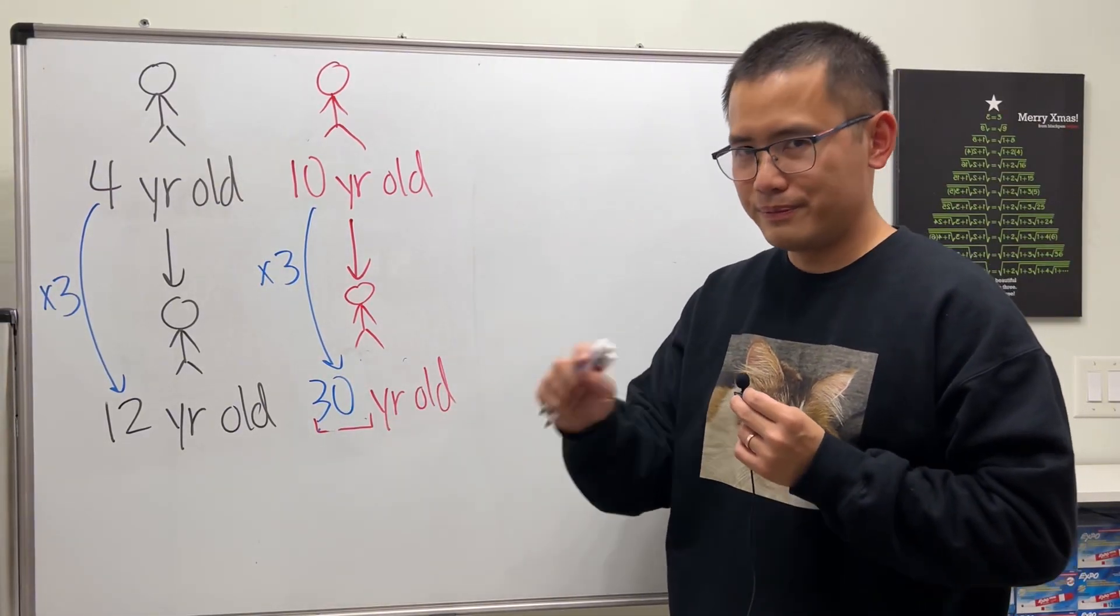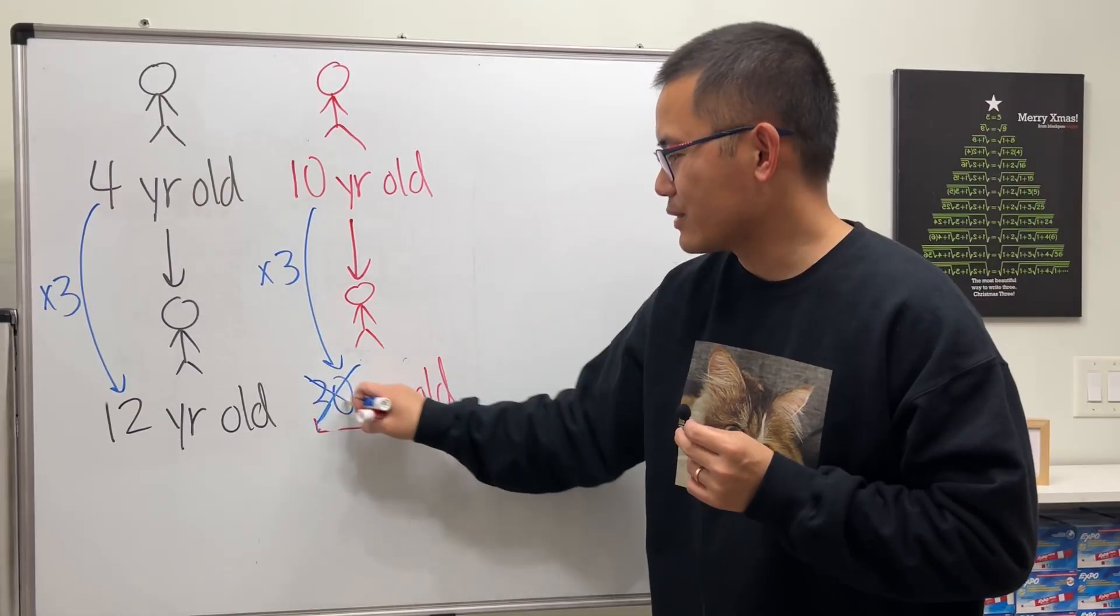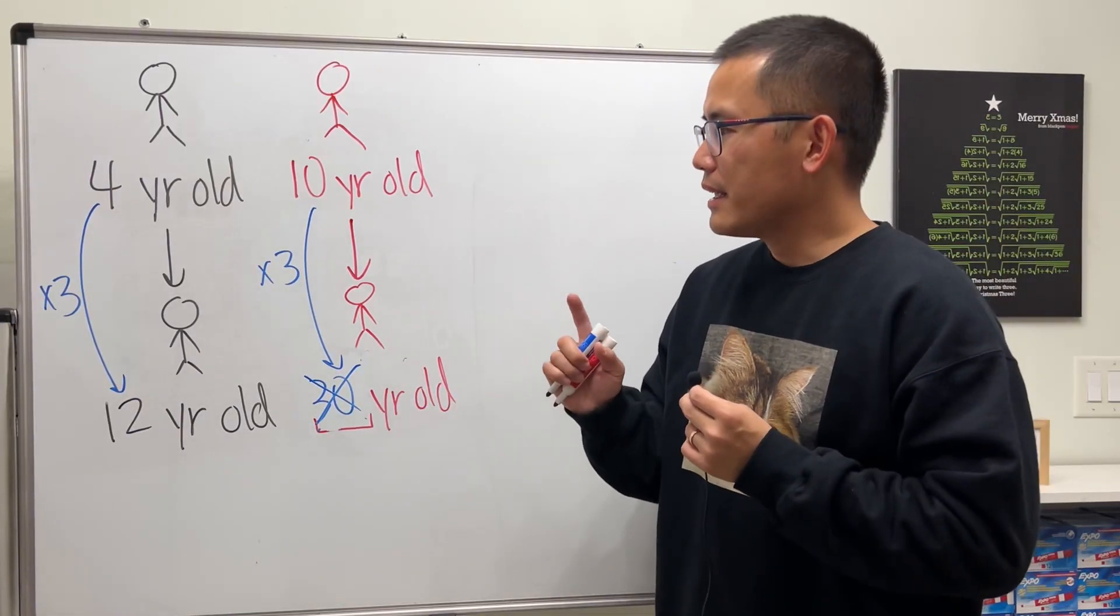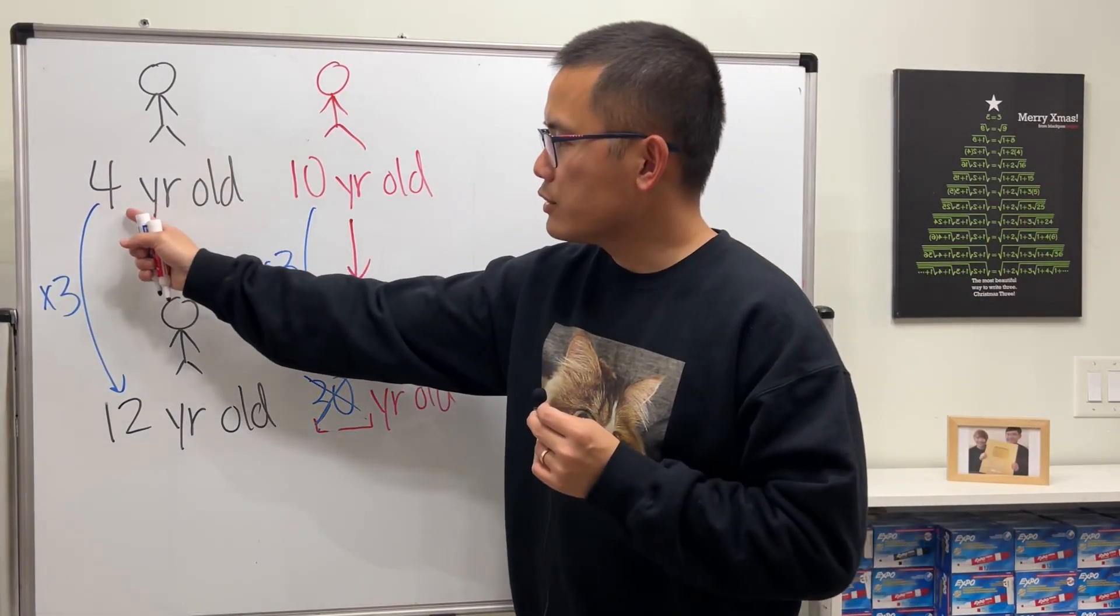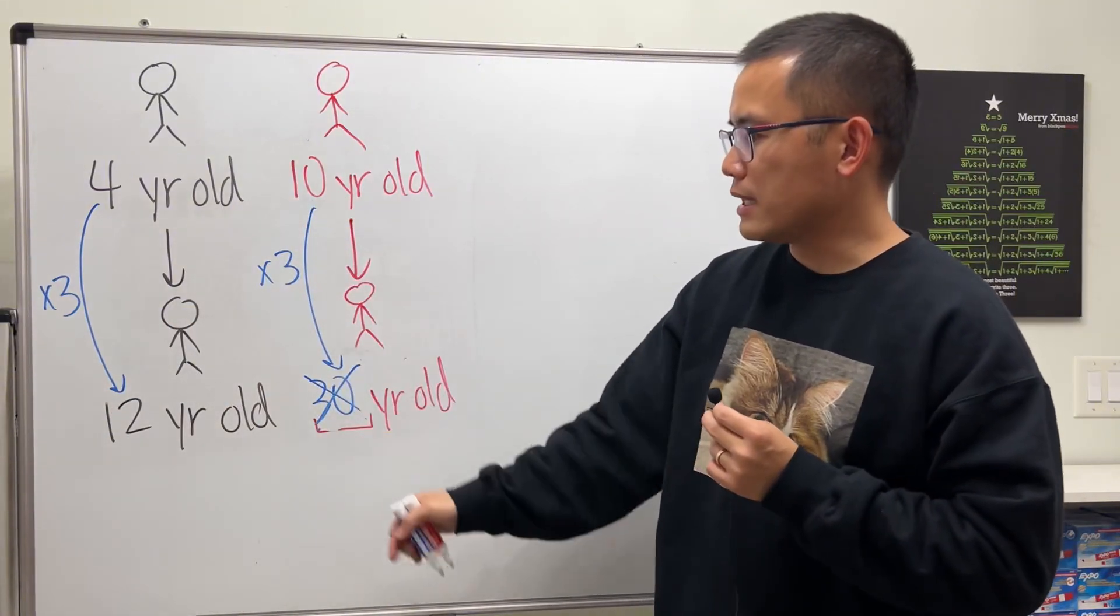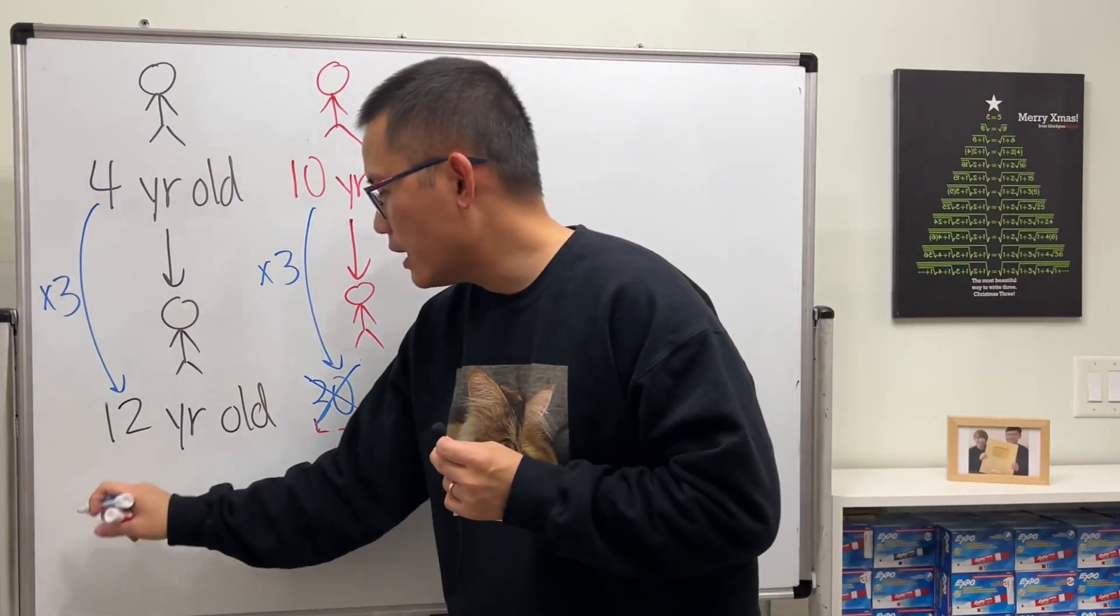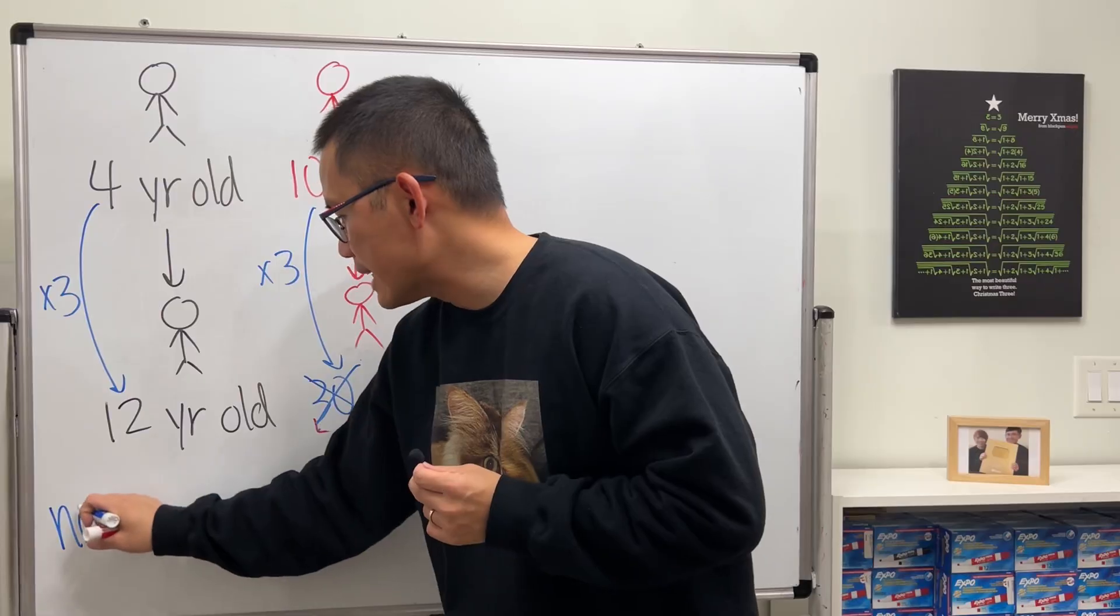No, it's actually not correct. Here's the deal: you cannot just multiply the same number throughout the process. This right here, we say the quantities, they are not directly proportional.